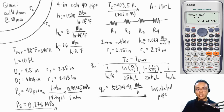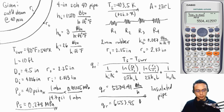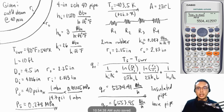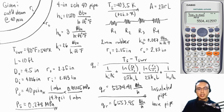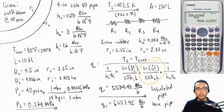Comparing the insulated pipe to the bare pipe, we had earlier determined 6,553.95 BTU per hour for the bare pipe. We now see the effectiveness of our insulation layer. The thin layer of insulation lowers the rate of heat loss from 6,500 down to 5,500 BTU per hour — that reduction is due to the additional resistance term introduced by the insulation.